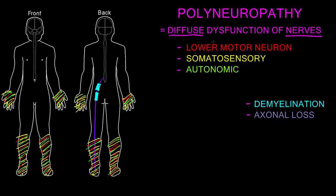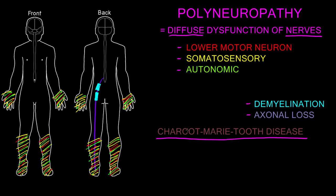An example of a genetic polyneuropathy caused by a gene mutation is called Charcot-Marie-Tooth disease — named after three different people who gave early descriptions of this disorder. It's a type of polyneuropathy that often runs in families because it's genetic. There are several different types of gene mutations that may cause Charcot-Marie-Tooth disease, and some primarily cause demyelination while others primarily cause axonal loss.